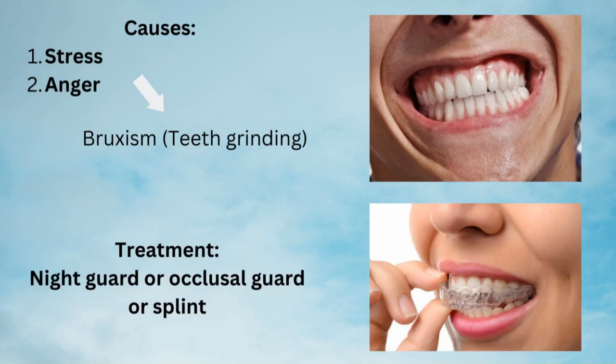The most common causes behind it are stress and anger, causing too much pressure on your teeth, leading to a condition called bruxism, or teeth grinding. The treatment is to reduce that grinding by placing a night guard, also defined as an occlusal guard because it sits on the occlusal surface of the teeth, or a splint.